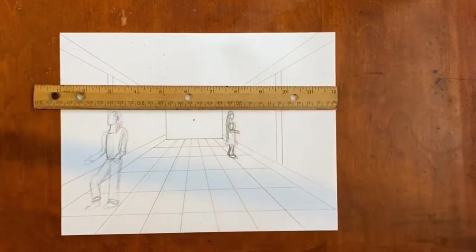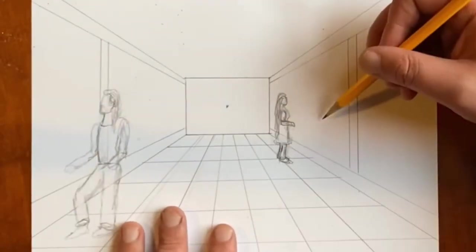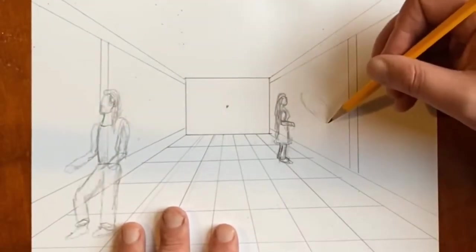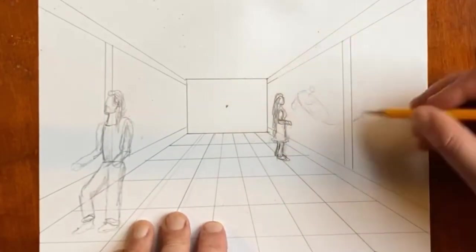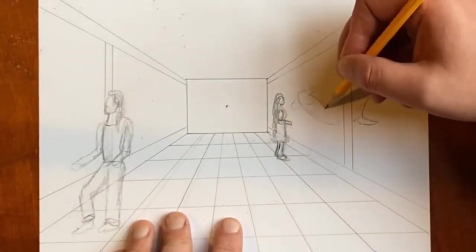You can see that with my two people, their heads are about at the same place, even though their feet are not. A lot of what drawing is is just little tricks, and that's one of them. Using the vanishing point to make the room is another one of those tricks we can use when we make art.